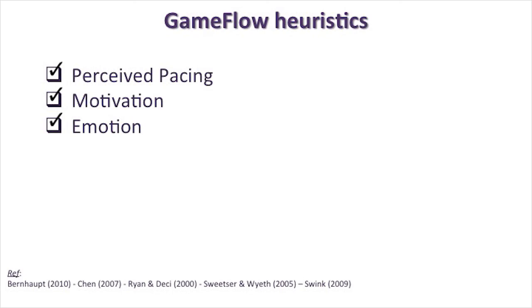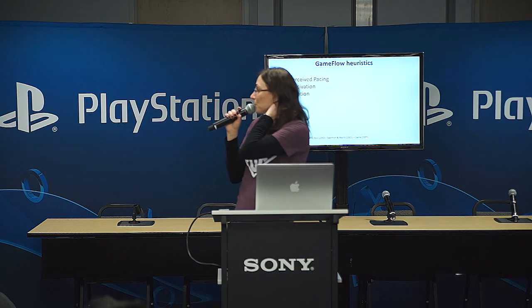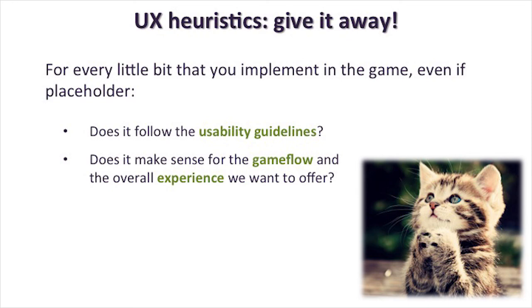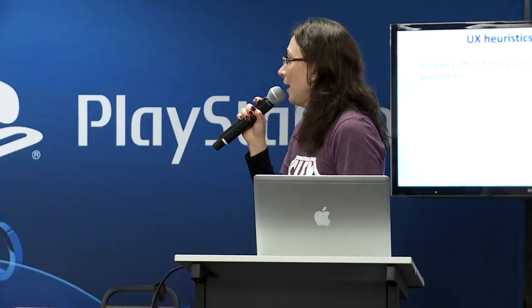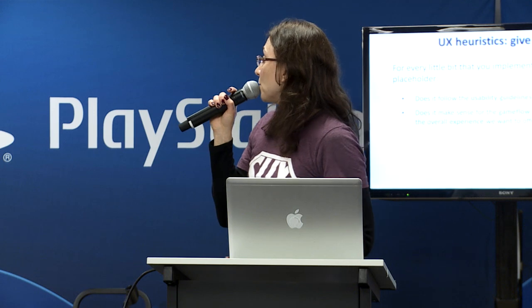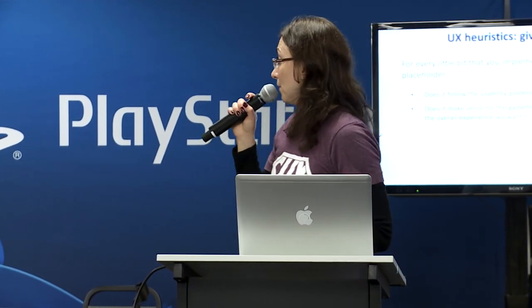So this is it — these are the three game flow heuristics: perceived pacing, motivation, and emotion. I'm not saying it's perfect. It's just an attempt to boil it down to something simple that I can translate to the team and we can work together trying to accomplish that. I was told by the internet that cats could provoke a positive emotional response. So for every little bit that you implement in the game, I tell the developers — even if it's placeholder — make sure it follows the usability guidelines and ask yourself, does it make sense for the game flow and for the overall experience we want to offer? Even adding a decorative asset with an electrical spark could have an impact on gameplay.